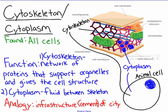The cytoskeleton and cytoplasm are found in all of our cells. The cytoskeleton acts as a skeleton in the cell — it's made up of proteins and holds the organelles in place. The cytoplasm is a fluid within the cell, in between the cytoskeleton. All of the space in between the organelles is the cytoplasm. Cytoskeleton is the protein fibers that add support; cytoplasm is the fluid. My analogy is that this acts as the infrastructure — the cement of the city.